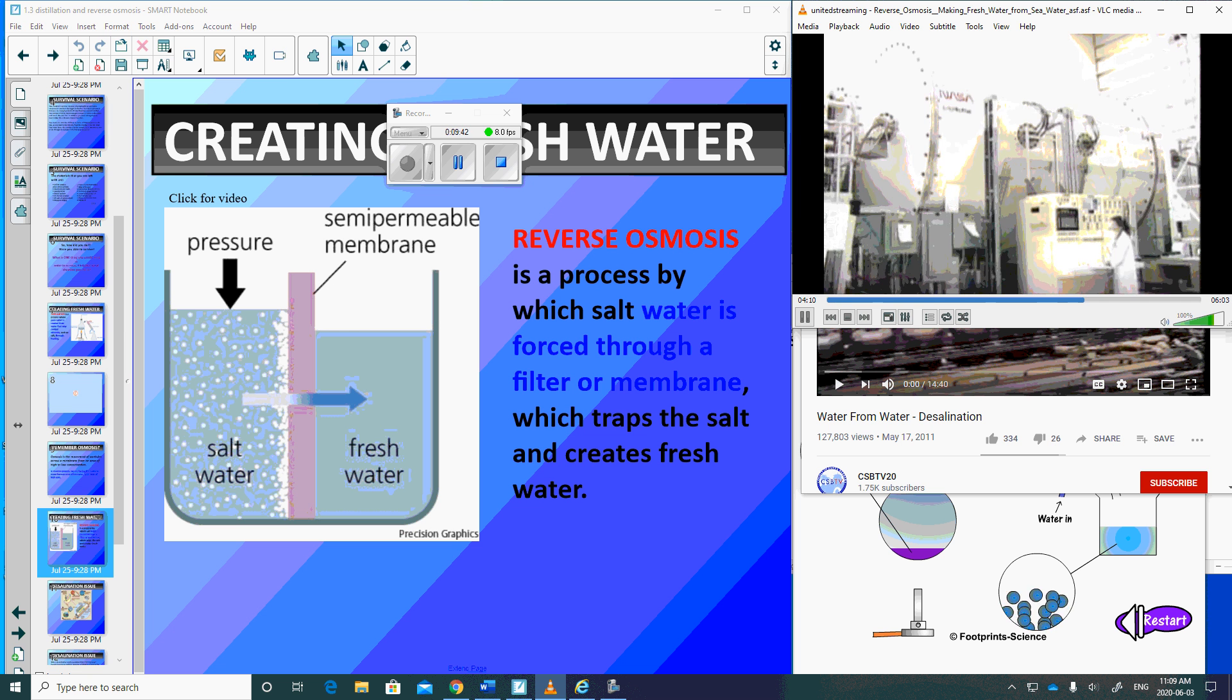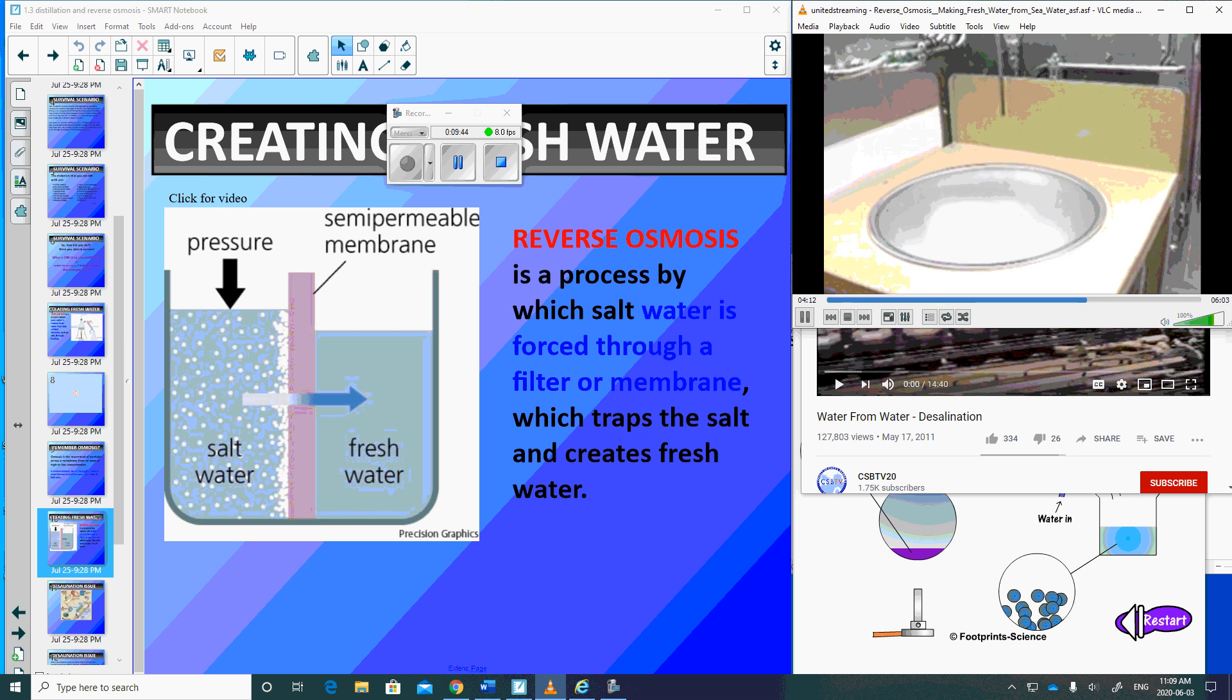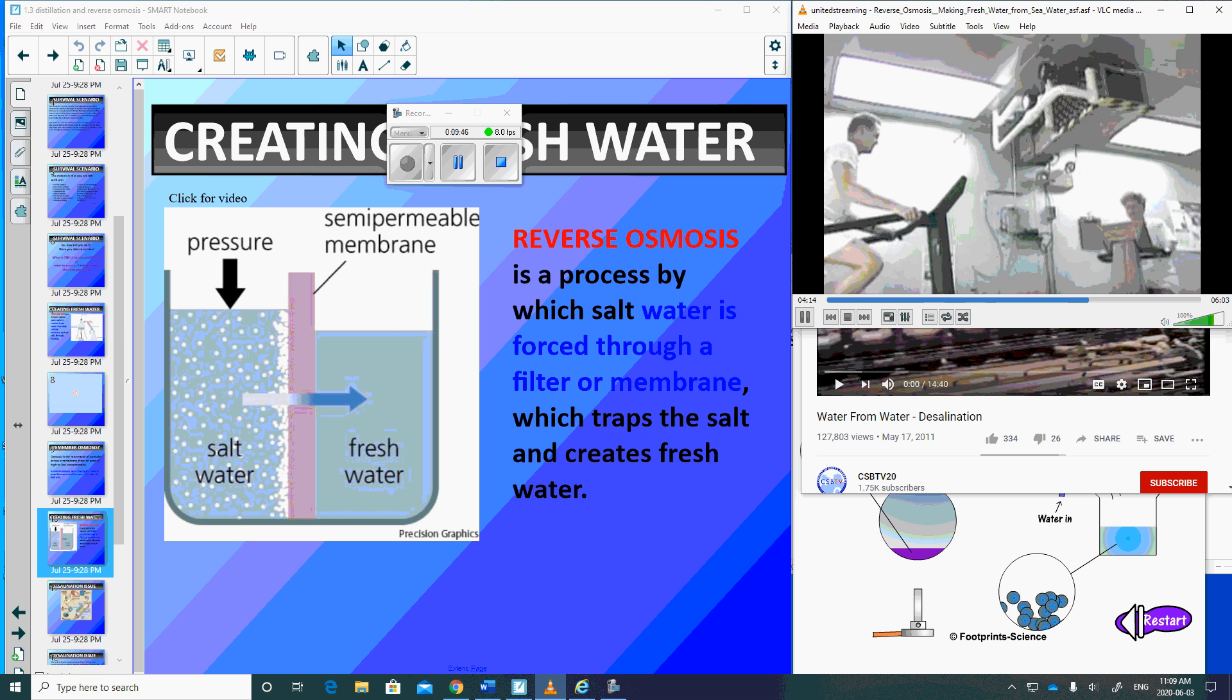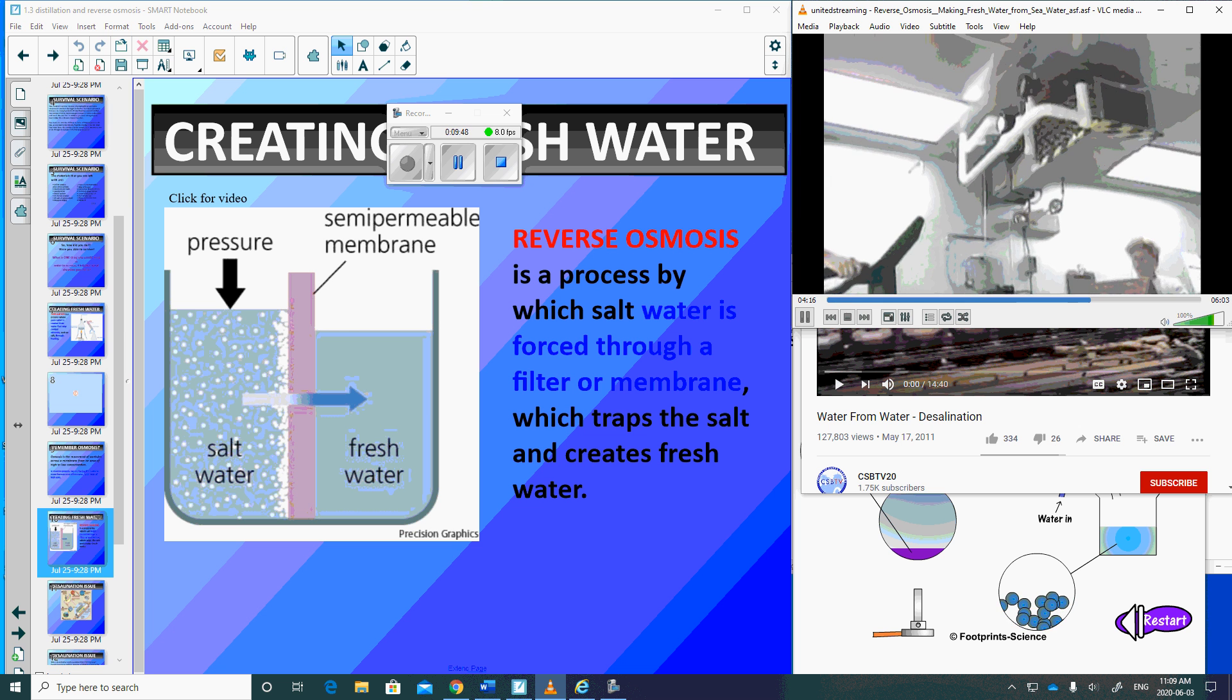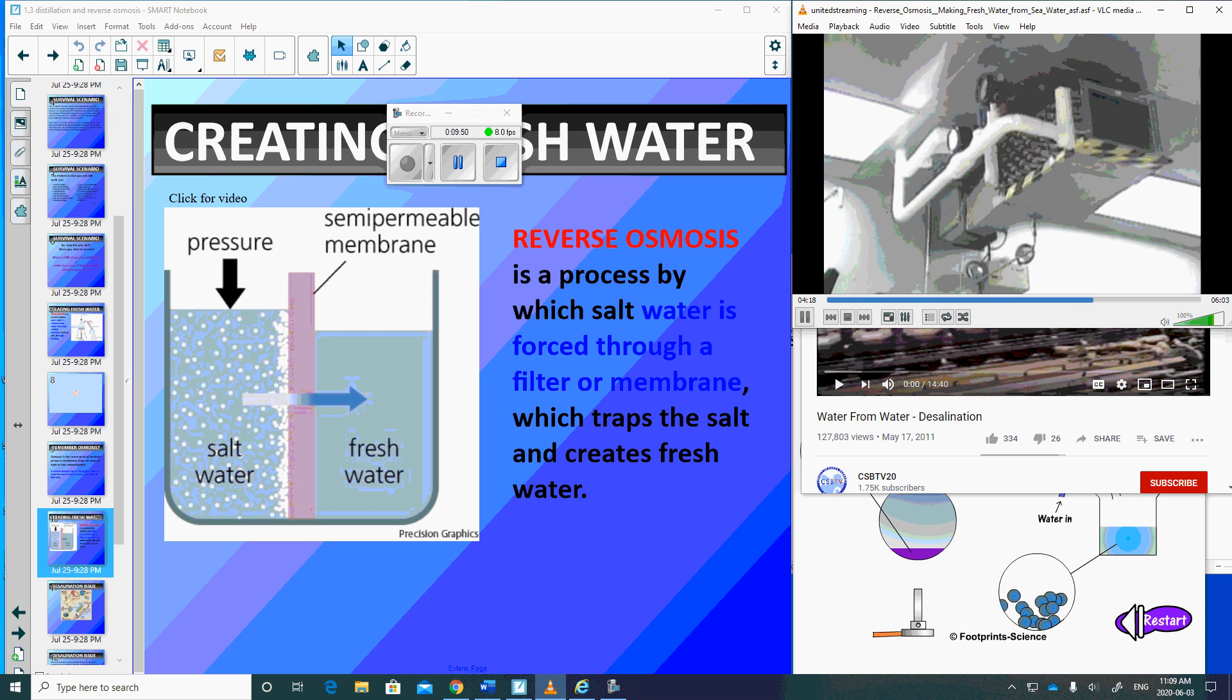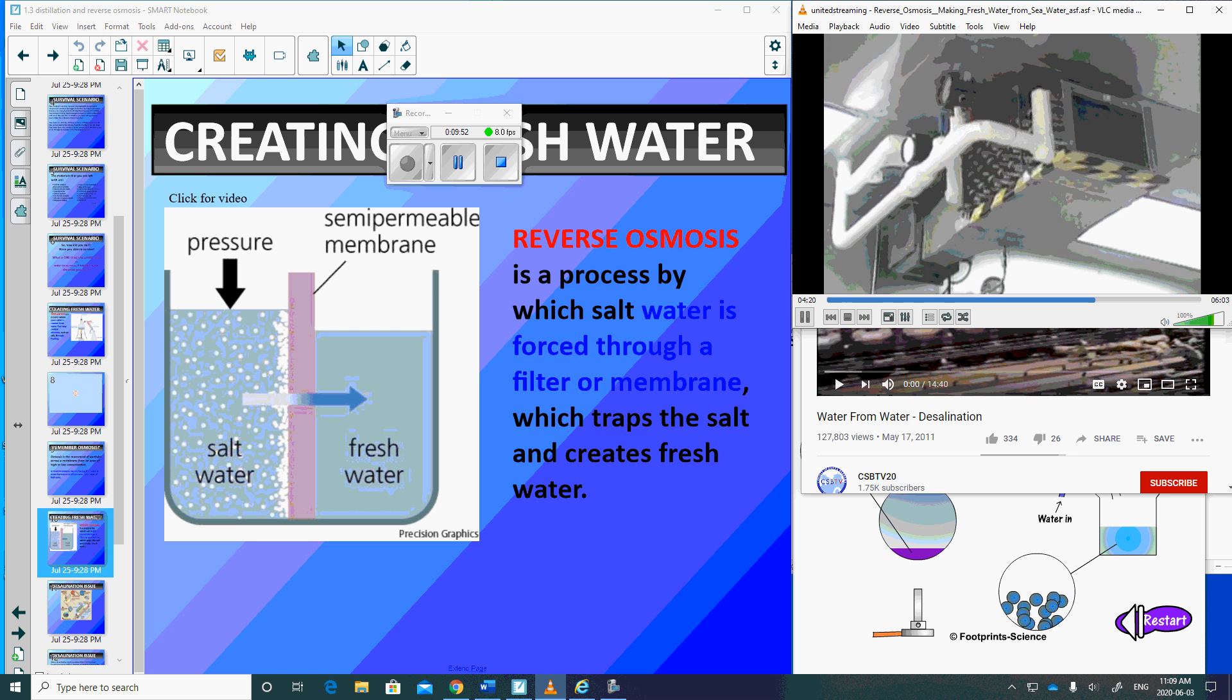Tests are underway at the Marshall Space Flight Center in Huntsville, Alabama, to recycle water from showers, sinks, washing machines, perspiration, and even urine from the astronauts. The project's director is Randy Humphries.